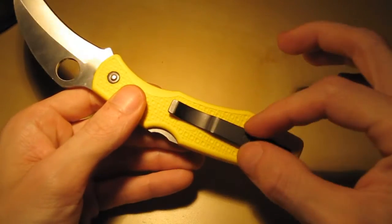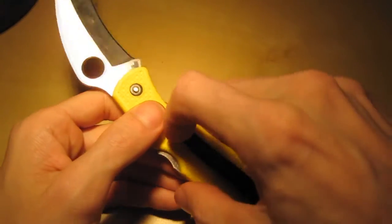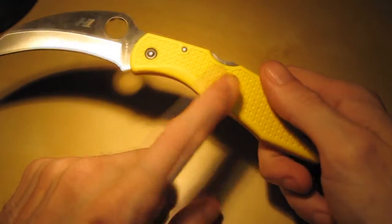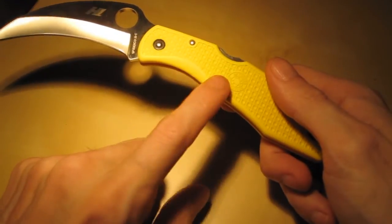You have a titanium pocket clip, so it won't rust as well. It's really strong. It holds in the pocket well. It's easily identifiable. If you dropped it in the water or something like that, you're going to see it.